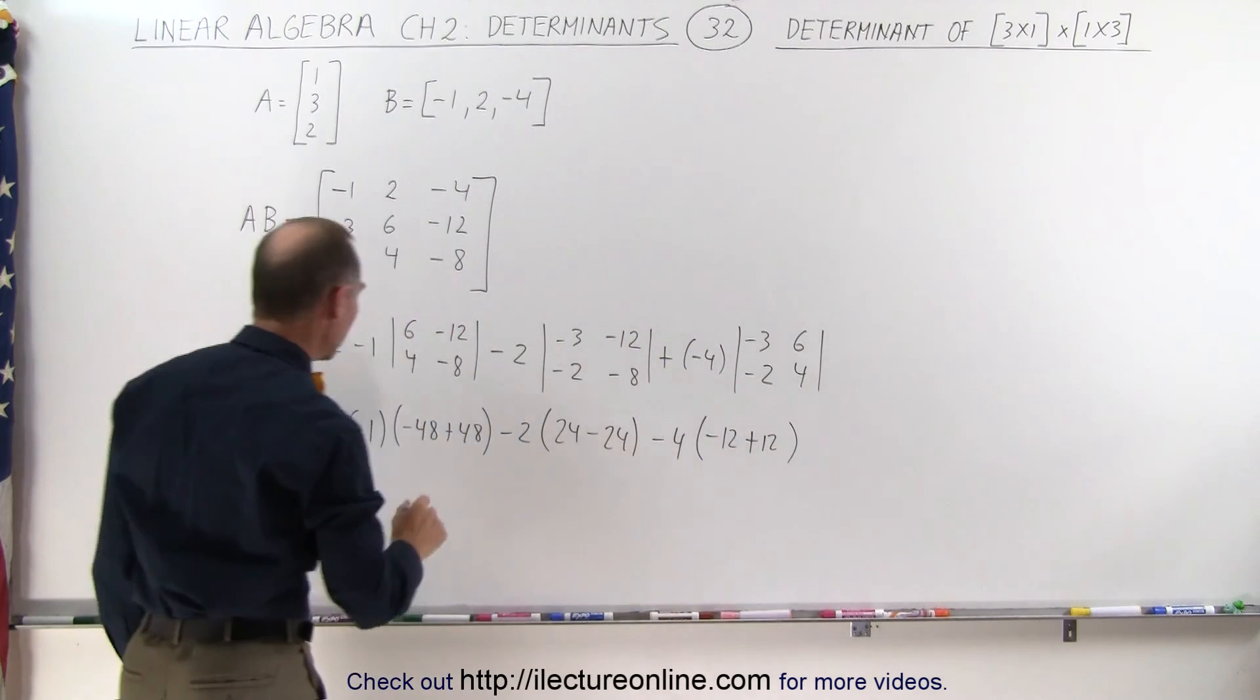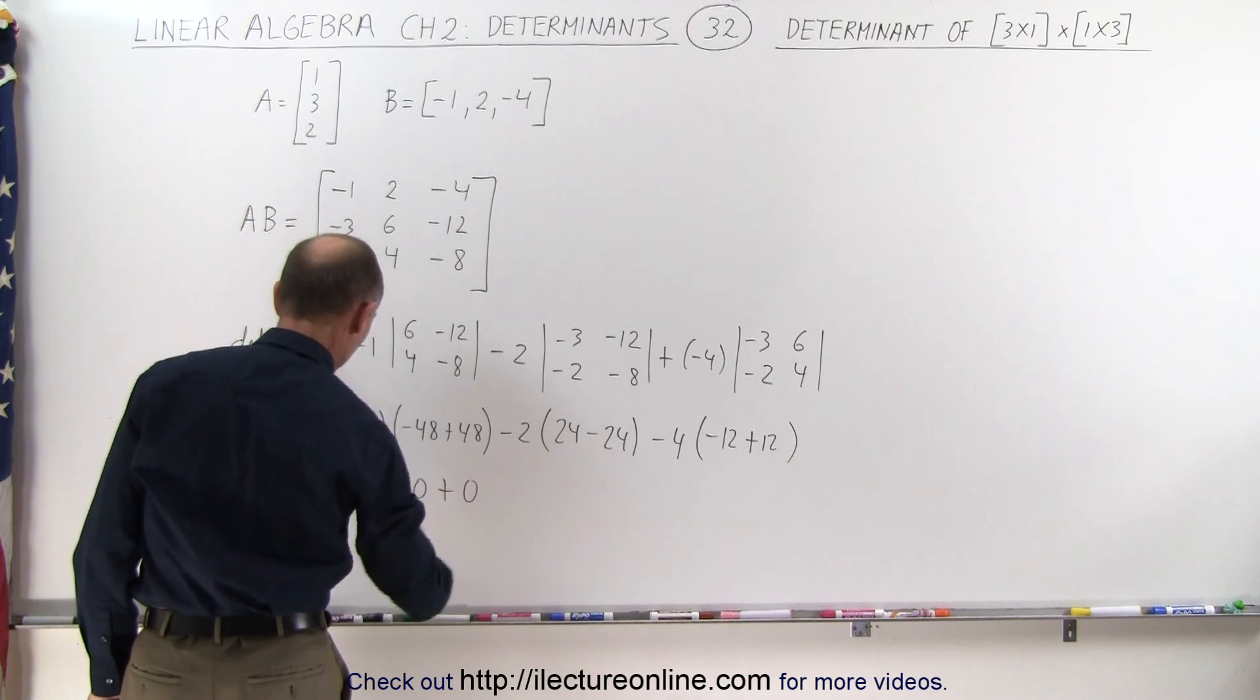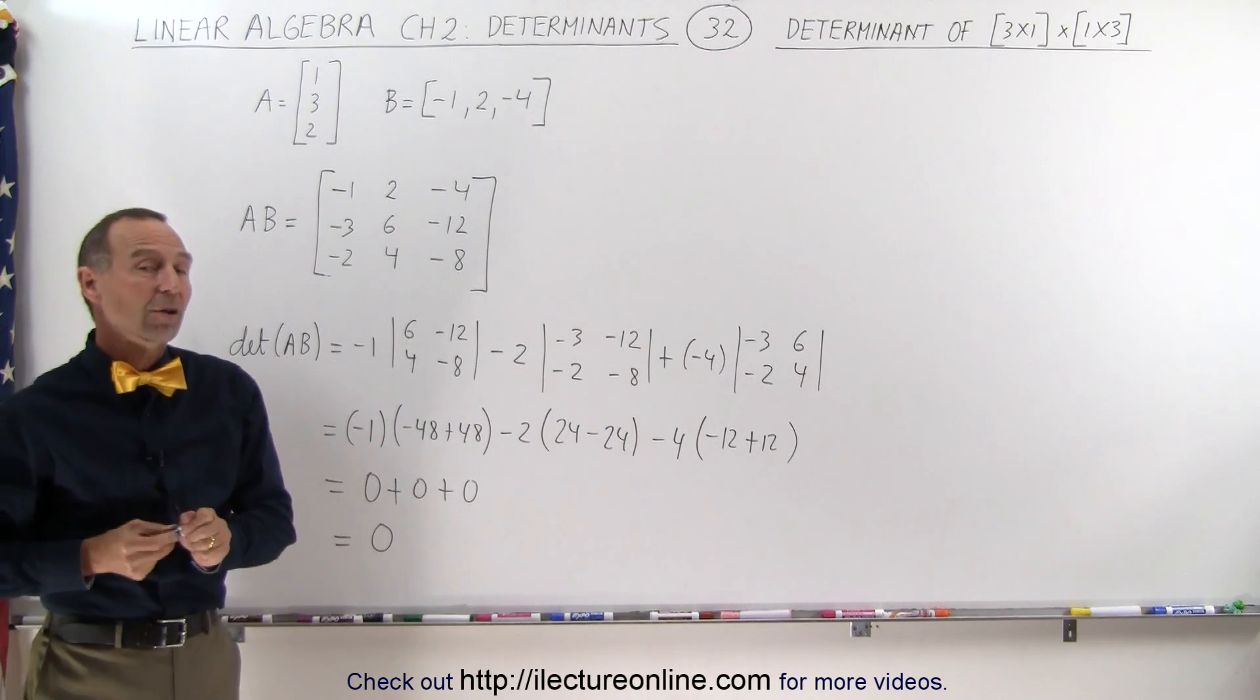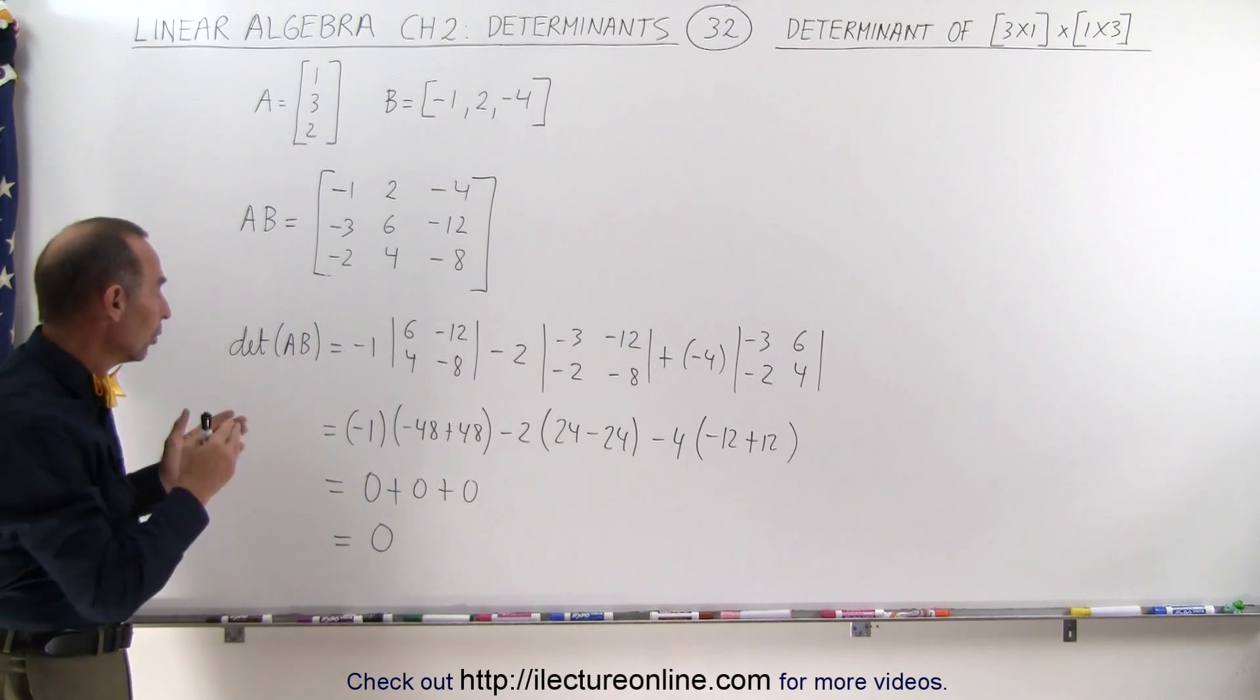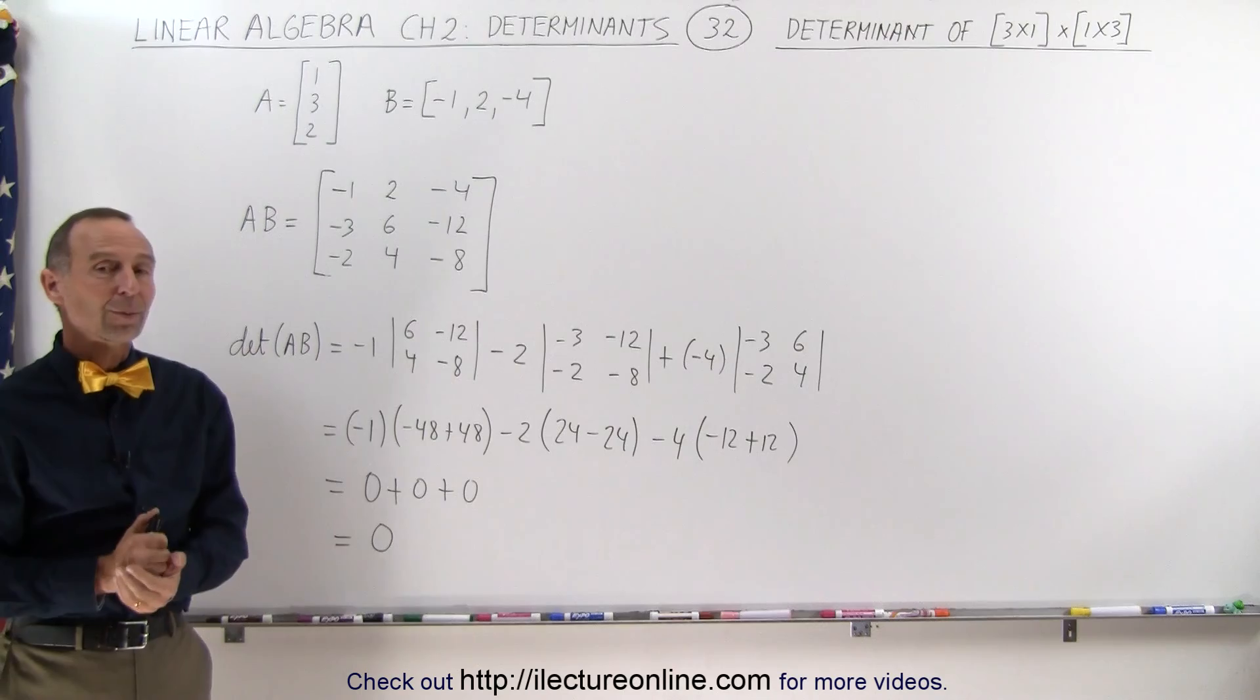And sure enough notice in each case this is zero plus zero plus zero or zero. When you take the determinant of an n by 1 times a 1 by n matrix you will always get zero and here's an illustration of how that works.